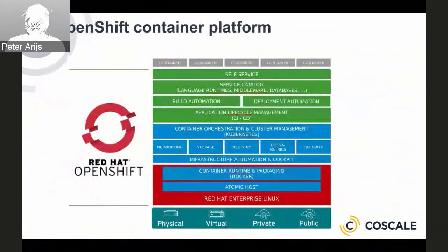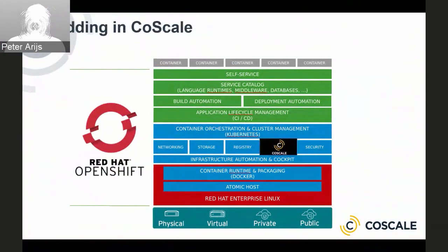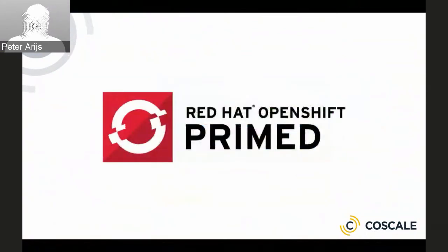This is where Red Hat OpenShift comes in, because it offers a packaged container platform built on Docker and Kubernetes to solve many of these issues. As part of the platform there are some basic logs and metrics, but OpenShift also has a strong ecosystem for more advanced capabilities — and this is exactly where CoScale comes in. CoScale adds a layer of detailed container and application monitoring to OpenShift, helping you maintain application performance in production and quickly understand when, where, and why performance problems occur.